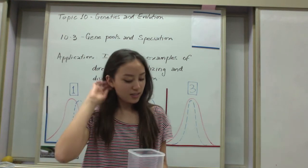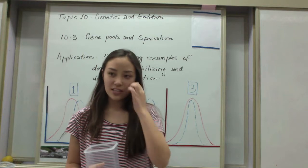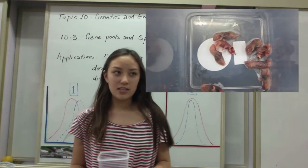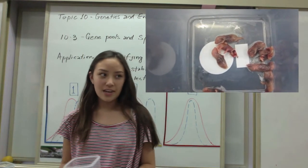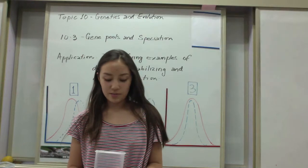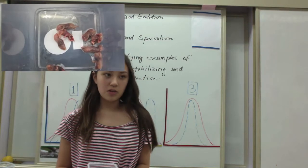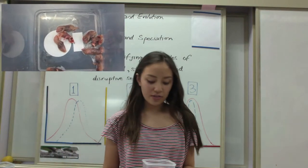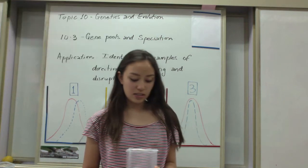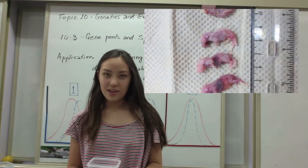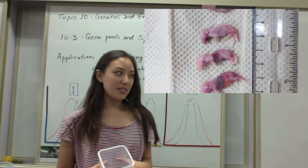So this is an example of stabilizing selection because all these mice are the same size, and that's because medium sized mice are the easiest to deliver when the mother mouse is giving birth. Mice that are too big are difficult to deliver and it can cause some health issues with the baby and possibly the mother, and then babies that are too small are too weak to survive, so medium sized babies are the easiest.